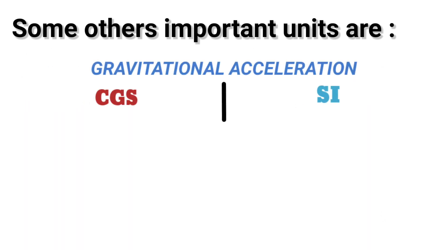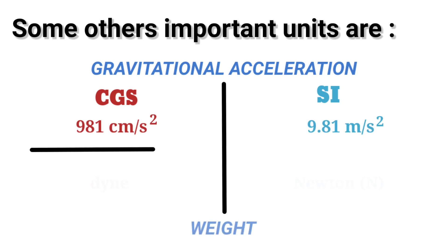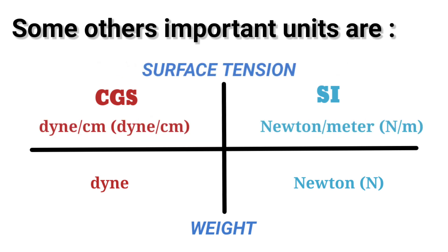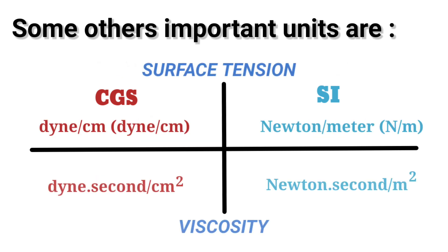Gravitational acceleration: CGS 987 centimeter per second square, SI 9.81 meter per second square. Weight: CGS dyne, SI Newton. Surface tension: dyne per centimeter, SI Newton per meter.